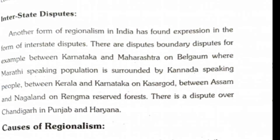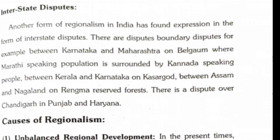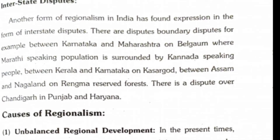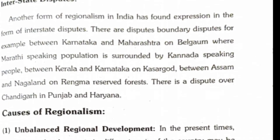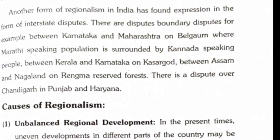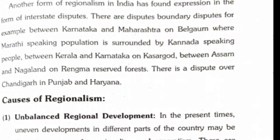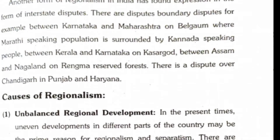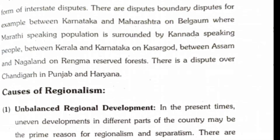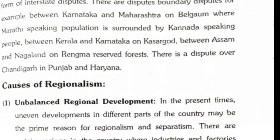Interstate disputes are another form of regionalism in India. There are boundary disputes, for example, between Karnataka and Maharashtra over Belgaum, where Marathi-speaking population is surrounded by Kannada-speaking people; between Kerala and Karnataka over Kasaragod; and between Assam and Nagaland over Rengma Reserve Forest. There is also a dispute over Chandigarh between Punjab and Haryana.